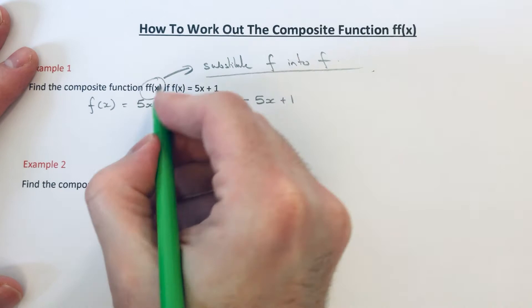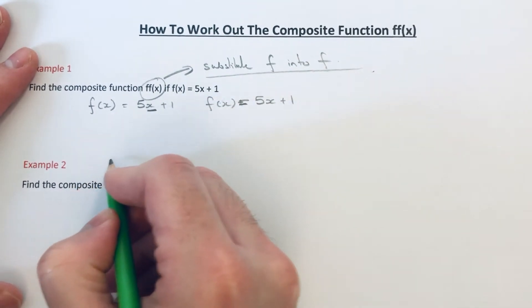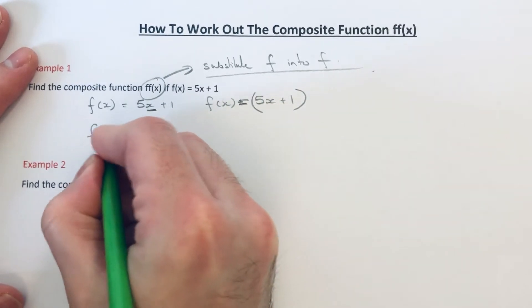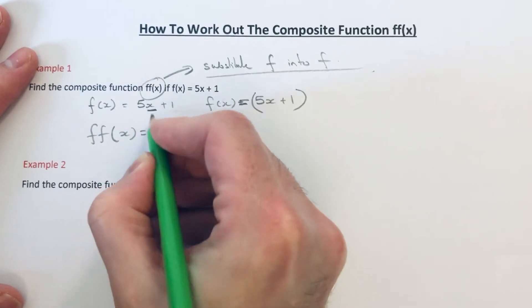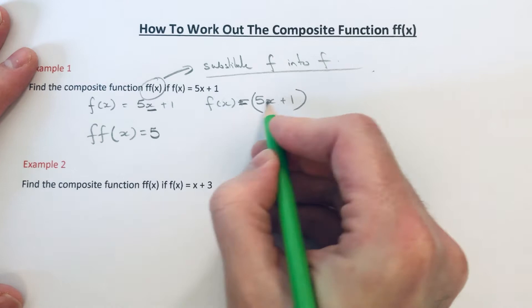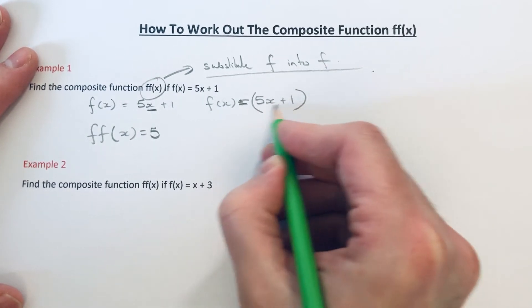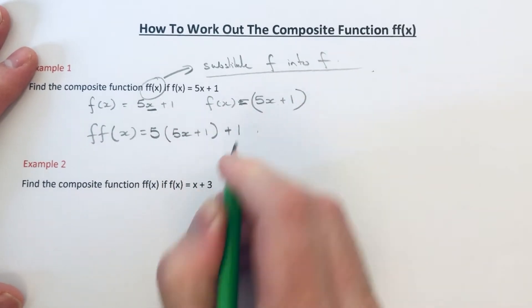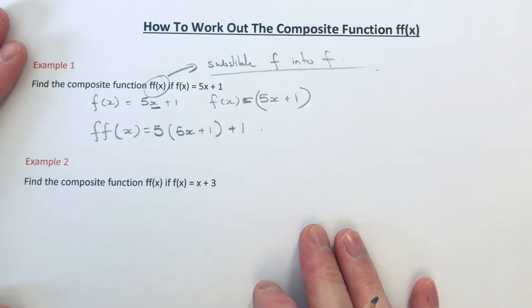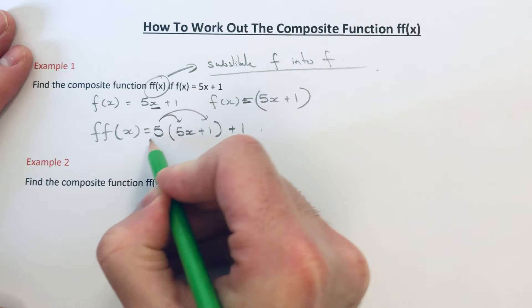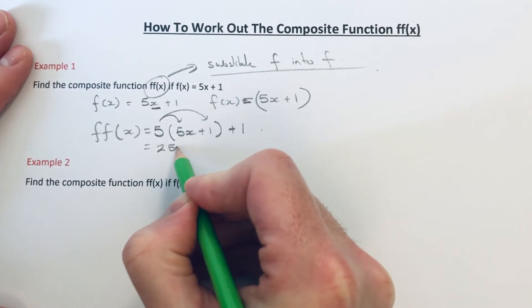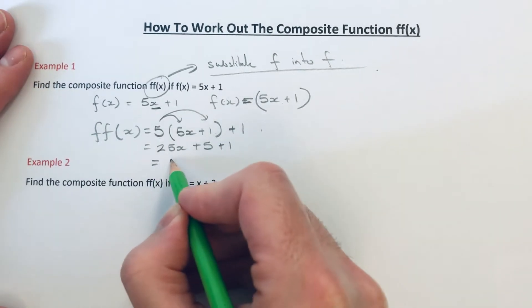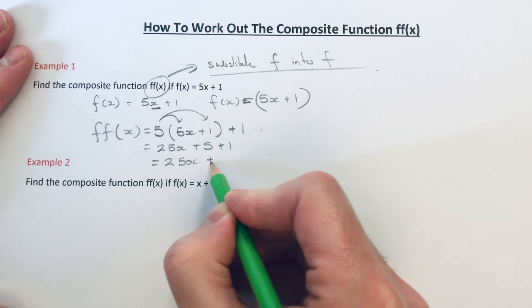So all we need to do then is change this x in the first function of f to 5x plus 1. So that x becomes 5x plus 1. I've put the second function of f in a bracket because there's two terms. So that would be our answer. I'm just going to simplify it though by expanding the bracket. So 5 times 5x is 25x, 5 times 1 is 5 plus the one on the end. So that will give us 25x plus 6.